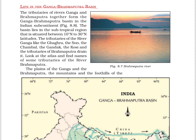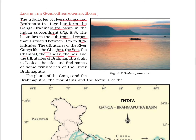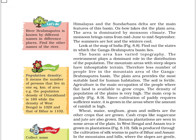Next, let's see life in the Ganga-Brahmaputra Basin. The tributaries of the Ganga and Brahmaputra together form this basin in the Indian subcontinent. It lies in the subtropical region, situated between 10 degrees north to 30 degrees north latitudes. The tributaries of the Ganga — like the Ghagra, Son, Chambal, Gandak, and Kosi — and the tributaries of the Brahmaputra drain into it. The Himalayas and the Sundarbans delta are the main features. Oxbow lakes dot the plain area. The area has a monsoon climate, with rains from mid-June to mid-September, hot summers, and cold winters.